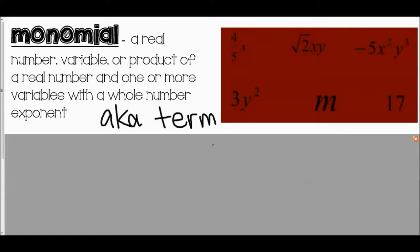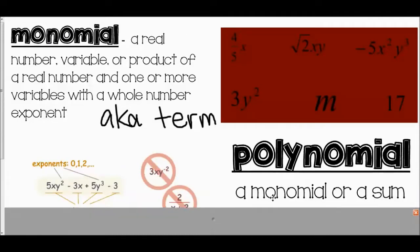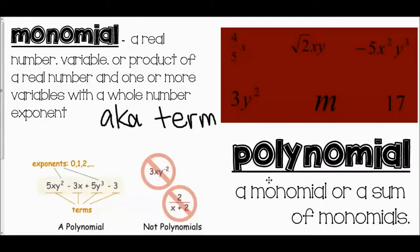Monomial — with the prefix 'mono' meaning one. Now polynomial — 'poly' means many. So it is a monomial or a sum of monomials. For example, five xy squared minus three x plus five y to the third minus three is a polynomial; each term has whole number exponents. Not polynomials: three xy to the negative second power has a negative exponent, and an expression with variables in the denominator would have an exponent of negative one — so those are not polynomials.